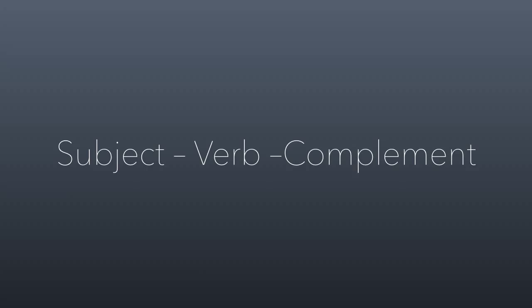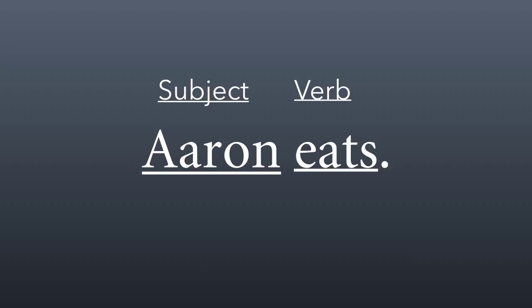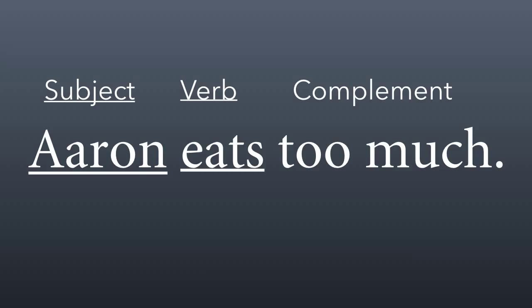Every sentence has a subject and a verb at a bare minimum, and also usually a complement. For example, this is a complete sentence: Aaron eats. The subject of the sentence is Aaron; the verb is eats. Although it is a complete sentence, it's not exactly descriptive or thorough or especially helpful. So we're going to add a complement to enhance its meaning by saying Aaron eats too much.